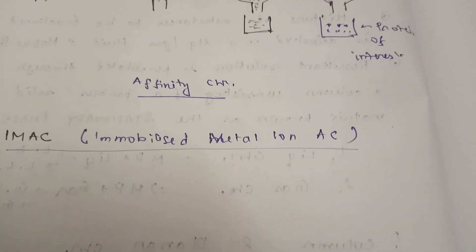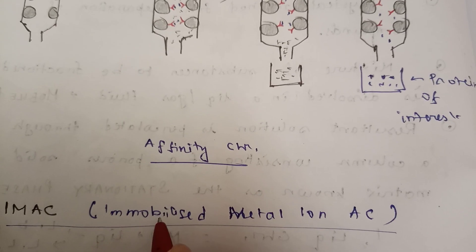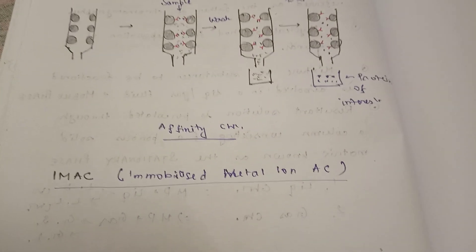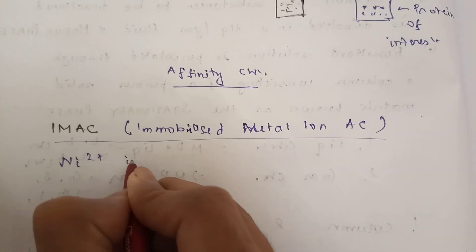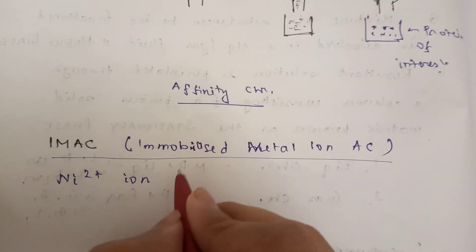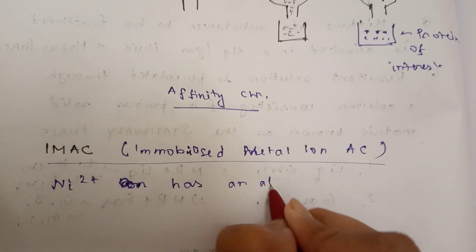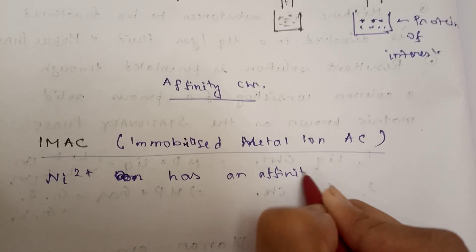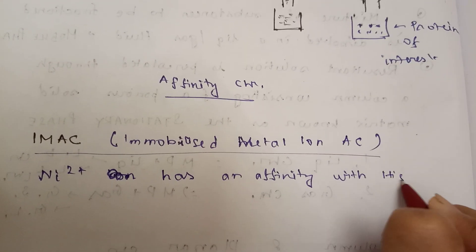Now we'll talk about a special type of affinity chromatography — Immobilized Metal Ion Affinity Chromatography, or IMAC. The main idea is that nickel ion, Ni2+, has an affinity with His-tag proteins.